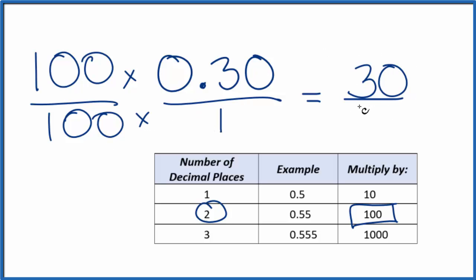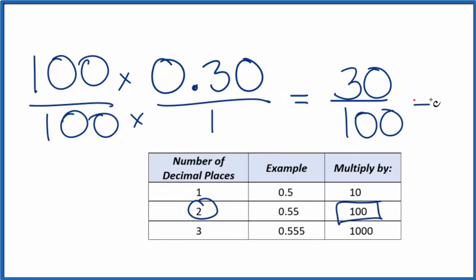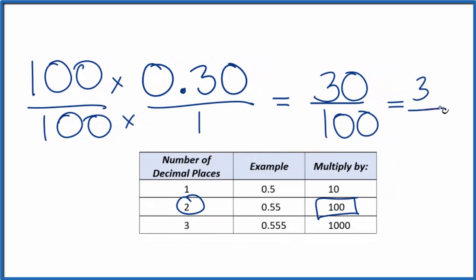100 times 1, that's 100. Now we have this fraction, 30 over 100. We can reduce this further, 10 goes into 30 3 times, 10 goes into 100 10 times, and we can't reduce this fraction any further.